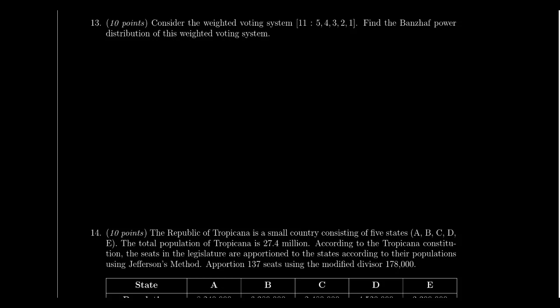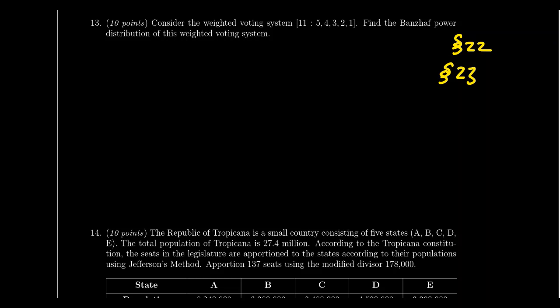Question 13 asks you to compute a power distribution for a weighted voting system. There are two power distributions we've learned: the Banzhaf power distribution from Lesson 22, which involves identifying critical players, and the Shapley-Shubik power distribution from Lesson 23, which involves pivotal players. The two answers are not identical, so make sure you use the correct method as specified. There's plenty of space to work out the full calculation.